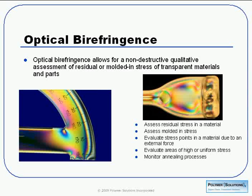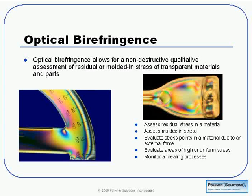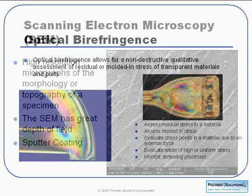In the two images here, you can see the internal stresses created in the molding process. The image on the left is obviously a protractor — it's fresh out of the pack, and the colors represent the stresses as the protractor was produced. The image on the right is a dog bone that we would use for tensile testing. It's injection molded, and with the colors you can actually see the flow stresses created as it was molded.